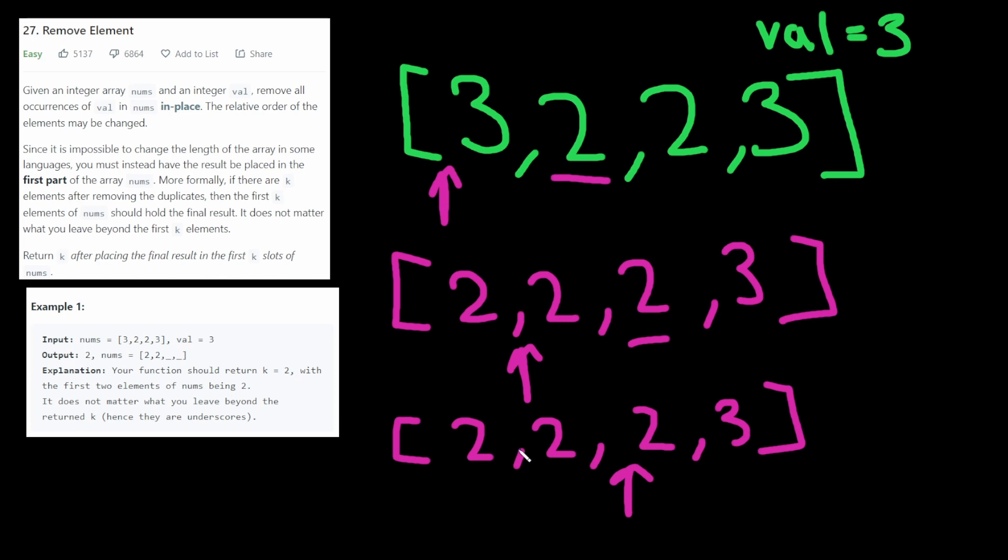And finally, we have this array here. And insert index has been incremented to two, and we reach this three. Three does match val, so we don't do anything. And that's it.